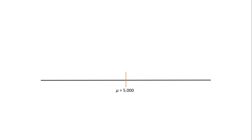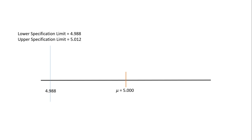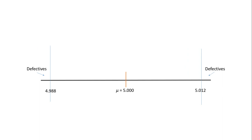Let us understand this concept using a number line. The mean of five inches is at the middle, which is the target of the manufacturing process. The lower specification limit, as specified by the customer, is 4.988, on the left-hand side. Anything produced of lesser length than 4.988 inches is termed a defective unit. On the right-hand side is the upper specification limit of 5.012.